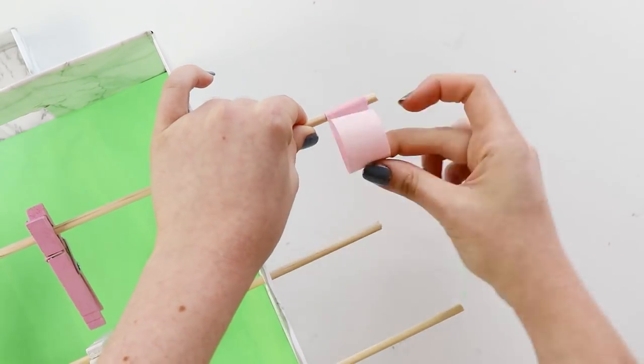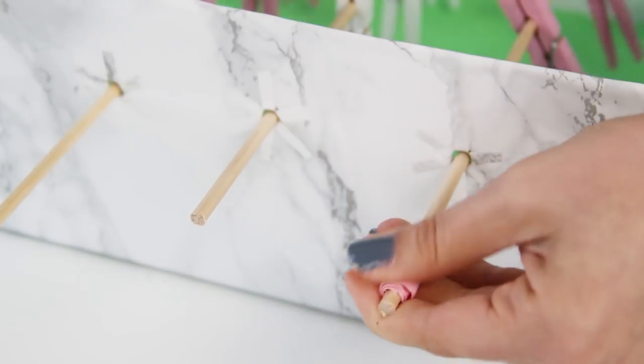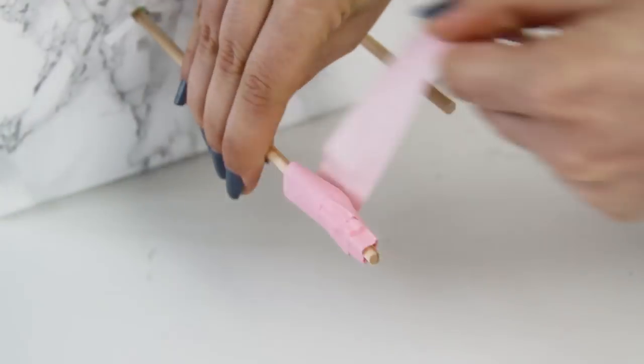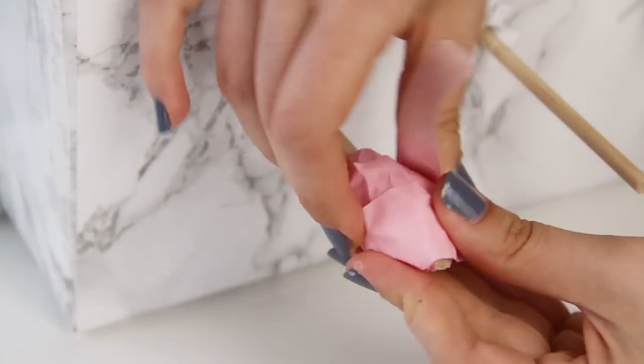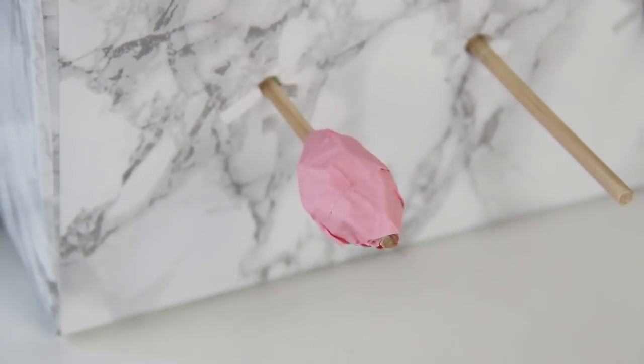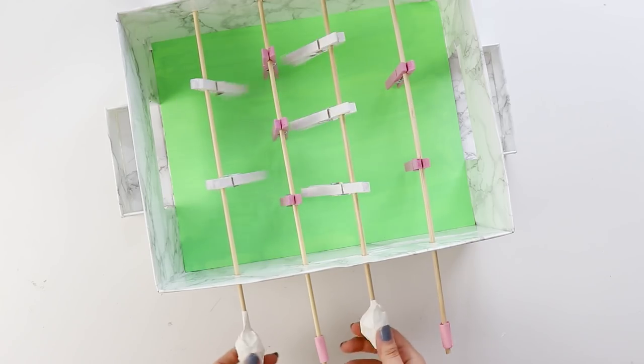To stop the dowels from getting pulled out from the game, wrap the ends of them with masking tape so that they're larger than the holes you cut. And then on the other side you can wrap layers and layers of masking tape until you have a nice handhold so that the dowels are a little easier to grip. Repeat that on both sides and I used two colors of tape for the two teams.